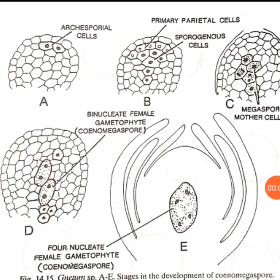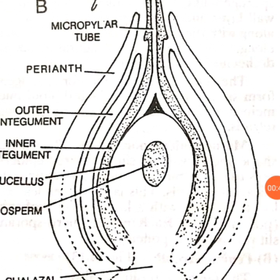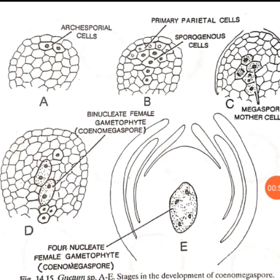Now we come to the development of the megaspore, or megasporogenesis. This topic comes from the chapter on Netum and is very important. In the young ovule, two of the four hypodermal cells will fuse together. These hypodermal cells form the archesporial cells — the hypodermal cells of the nucellus differentiate to form archesporial cells.